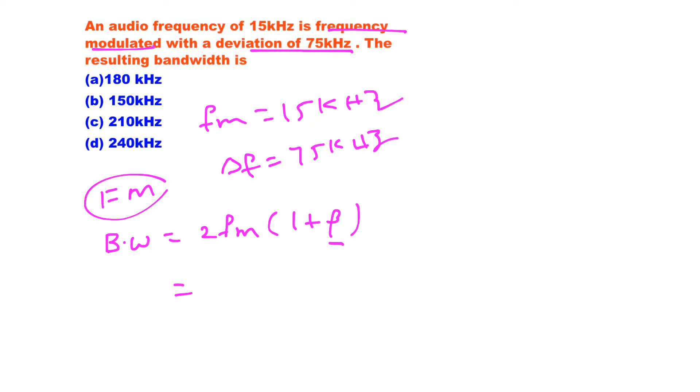So here frequency modulated signal. Now we need the beta value. So what is beta? Beta is nothing but modulation index. So beta is defined as the ratio of frequency deviation to message frequency.